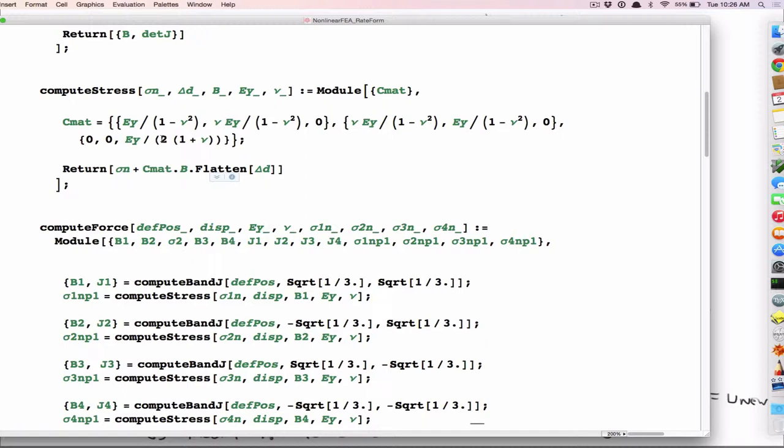And what this is, actually a displacement increment. B times a displacement increment gives me an increment of strain. An increment of strain times my coefficient matrix gives me an increment of stress. And so then I add it to the old stress. So I have a previous stress that I initialized to zero, and then I accumulate it. So now I can see how the stress evolves over time.